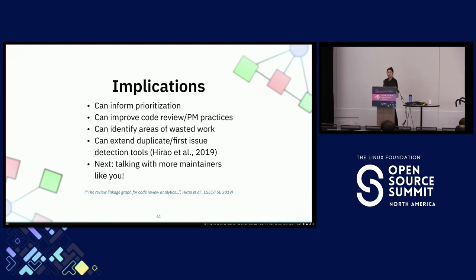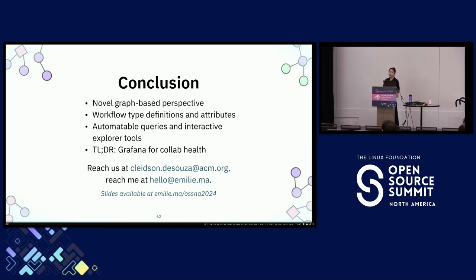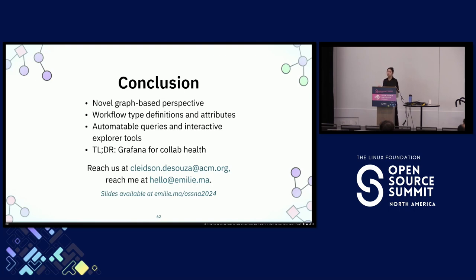The biggest next step for our project is talking more with developers to understand the implications of our workflow type definitions. If you'd like to work with us on understanding workflow types in context in your project, please feel free to reach out. One of the core advantages of our approach is that it's automatable, making it easier for maintainers to identify and curb unwanted patterns of development. Think of this PR issue graph as a sort of Grafana to monitor your project's collaboration health—it can help identify problem areas as early alerting when things start going south, and also serve as a global reference point to understand your project as a whole.